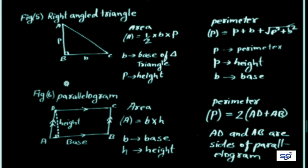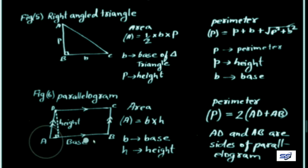Figure 6 is a parallelogram. In a parallelogram, opposite sides are parallel and equal. Given parallelogram ABCD, the dotted line represents the height and AB represents the base.